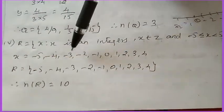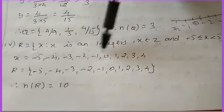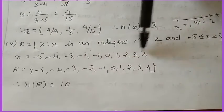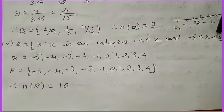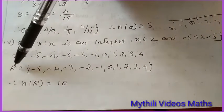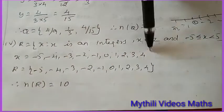x is equal to minus 5, minus 4, minus 3, minus 2, minus 1, 0, then 1, 2, 3, 4. Till 4 we have to take, 5 is not included. So cardinal set R is equal to what are the numbers?